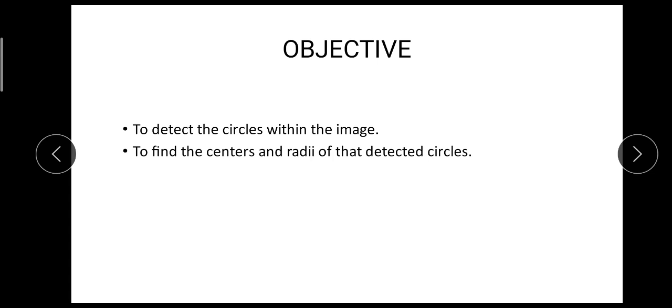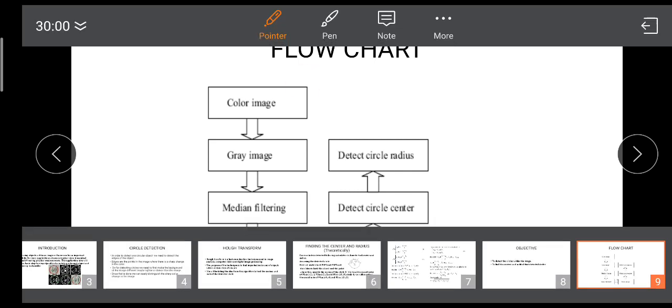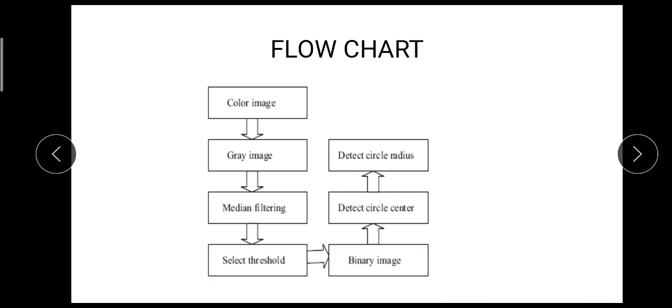So the objectives of this presentation: the main objectives are to detect the circle within the image and to find the radius and circle center of the detected circles. So this is the flowchart: here the first thing we are doing is giving a colored image as input. Then we are converting the colored image into a gray image for detection of sharp edges. After that we are using median filtering and selecting the threshold. After selecting the threshold we get the binary image, and from the binary image we detect the circle center and get the radius.